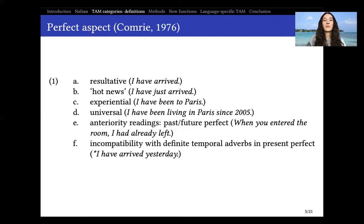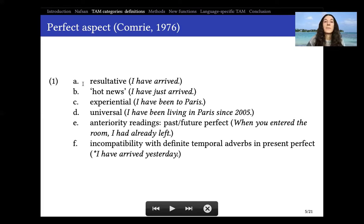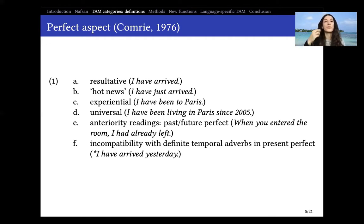Let us start with some definitions that will ease our way into the grammatical nature of testing for the category of perfect aspect. Perfect aspect is a category that has been seen mainly as an English category, or English has been taken as a model to look for this category in other languages, primarily because it has some interesting features in English and is always used as a starting point to look for more language-specific properties. Following Comrie, the first function is the resultative function — for instance, 'I have arrived' refers to the result state of the arrival event.